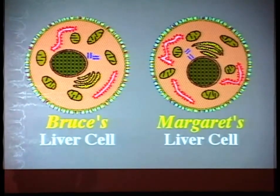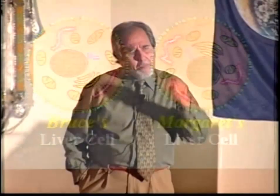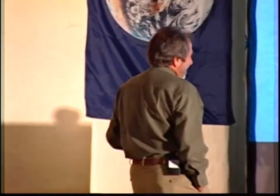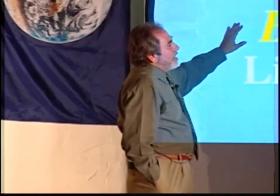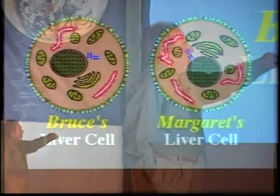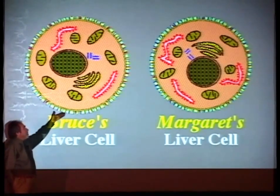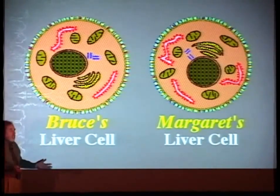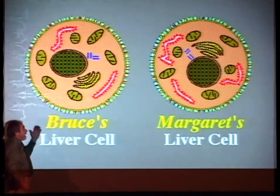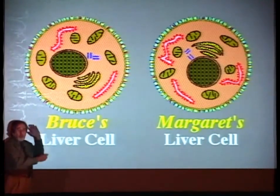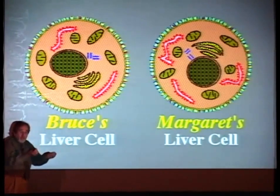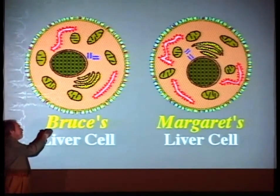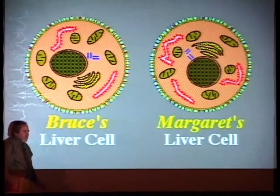So all of a sudden I say, where's the self? What is the self? What makes you, you and the person next to you, not you? I use two cells, Bruce's and Margaret's — two liver cells, because 99% of the cell is liver in function. 99% of the cell is exactly the same in Margaret and Bruce. Liver cells do the same thing. Liver enzymes in me would be the same as liver enzymes in Margaret.